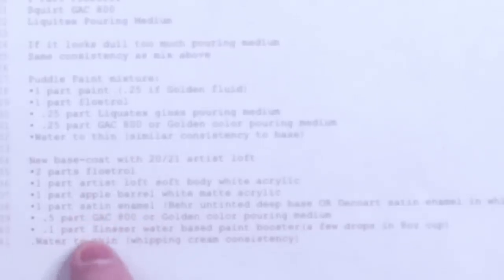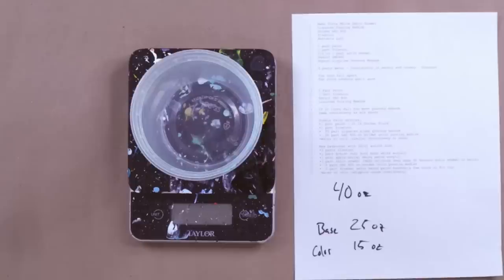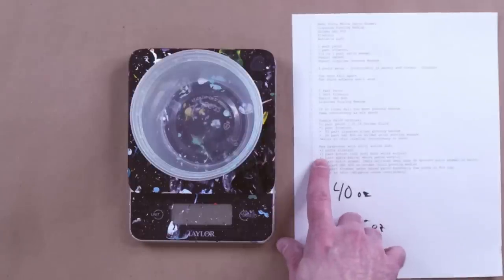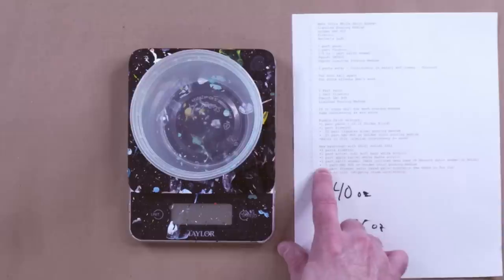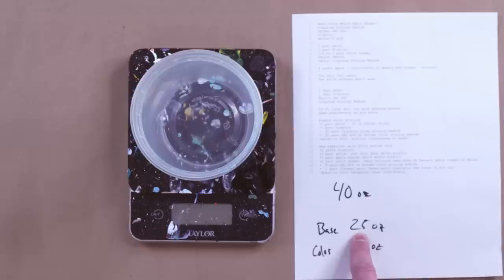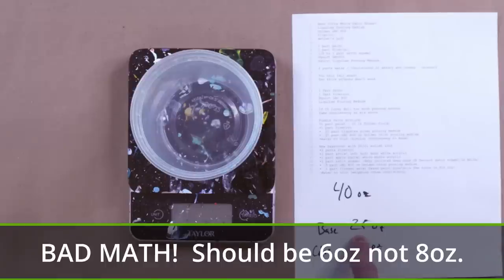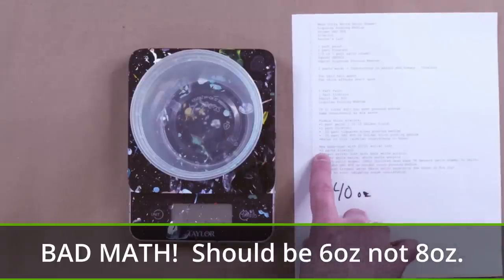And she uses a little bit of Zinsser paint booster. I am not going to use that this time. So that means I need one, two, three parts. I'm only going to do a half part of that. So three and a half parts. So four total parts. And if I need 25 ounces, divide that by four and it's just over eight ounces of each thing for a part. So that means I need 16 ounces of Floetrol.